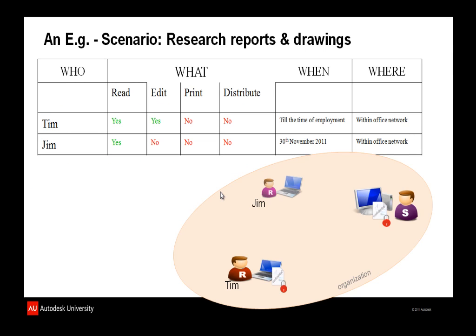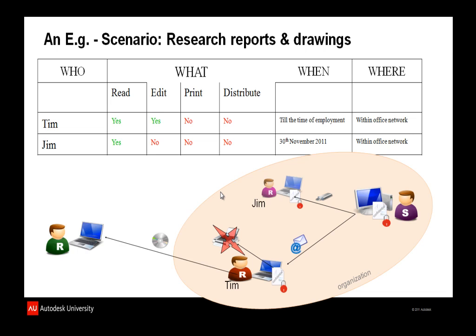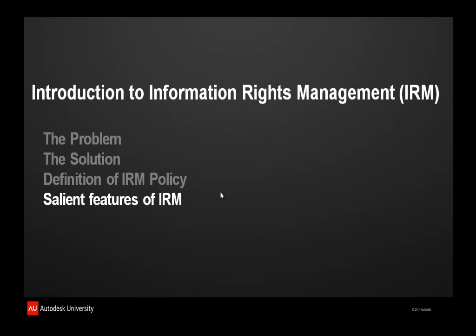Let's take a scenario involving research reports and drawings. There are two users, Jim and Tim, to whom an AutoCAD drawing will be sent. Jim has only read access, while Tim has read and edit rights. If Tim tries to print the document, he will not be able to because he lacks print access. Similarly, if Tim forwards the document, the recipient cannot open it. After the 30th of November, Jim's access will automatically be removed.